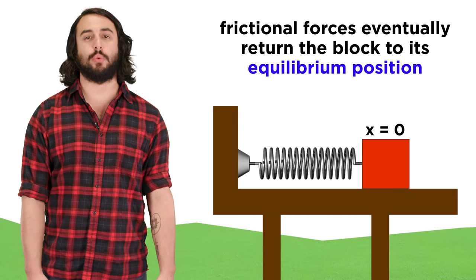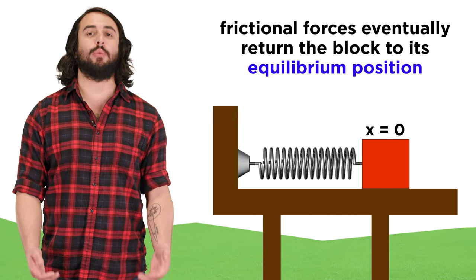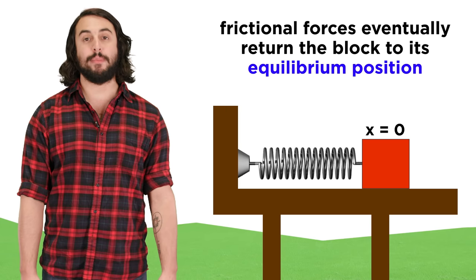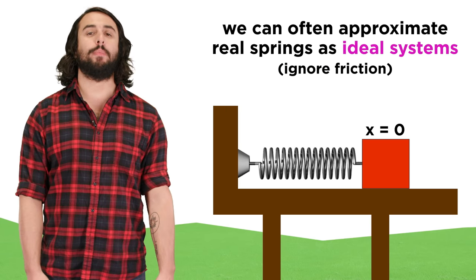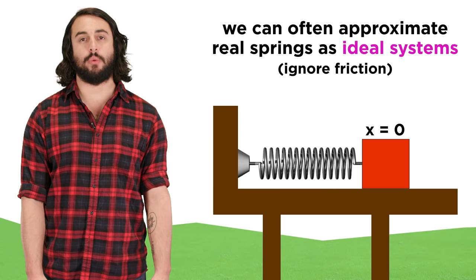In reality, frictional forces will dampen the spring's activity, and it will eventually come to a stop, but for many systems, an ideal mass spring system will be a decent approximation for a real one.